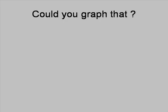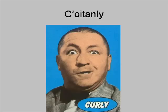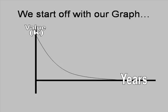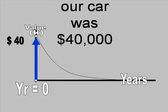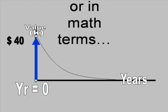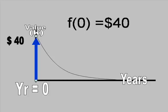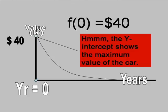Could you graph that? Certainly. We start off with our graph at year equals zero. Our car was $40,000. Or in math terms, F of 0 equals 40.